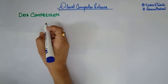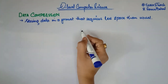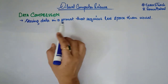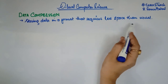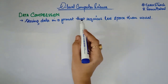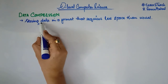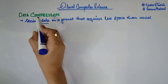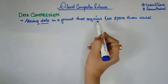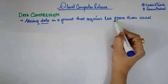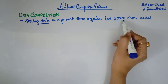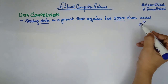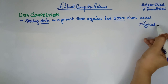Let me share the definition of data compression first. It says that storing the data in a format that requires lesser space than usual. It means that we are basically changing the format of the data in a way that it requires lesser space than the original.